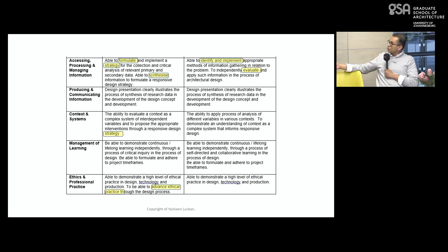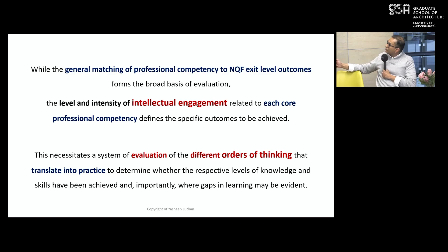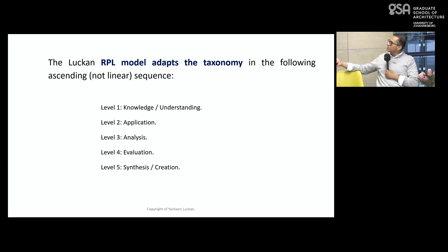The RPL model adapts a taxonomy, and I'm always self-critical but it's not actually a linear sequence — these things can happen simultaneously and interchangeably. What I want to say is that one thing the model does is take the SACAP competencies, group them into fewer categories, and focus more on the process of design rather than the product itself.